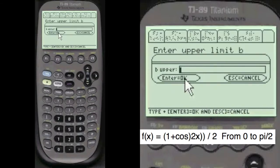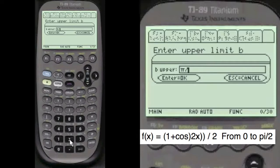And the upper limit was alpha pi divided by 2.